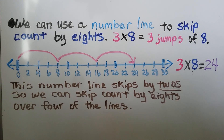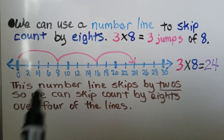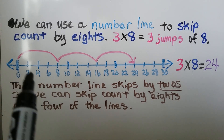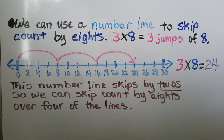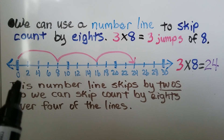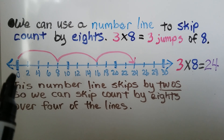Notice this number line skips by 2s — it goes 0, 2, 4, 6, 8. So we skip count by 8s over 4 of the lines.